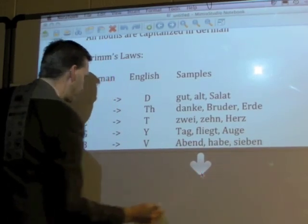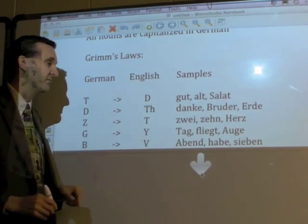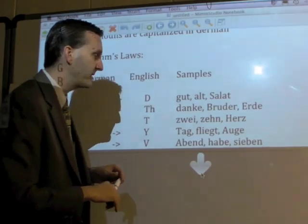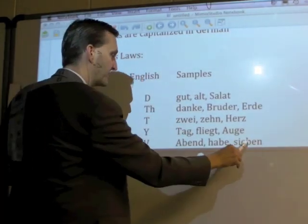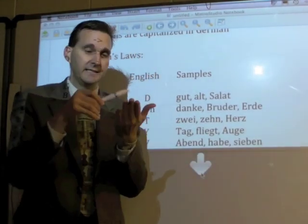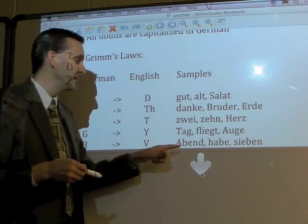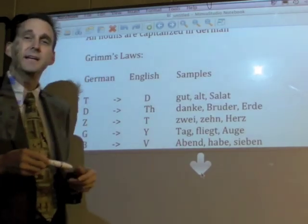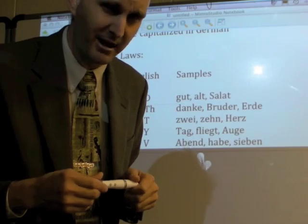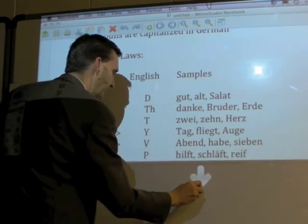The German B becomes an English V. Like 'sieben' — where we say 'seven' with a V, the Germans have a B that turned into a V for English. Or 'habe' — 'ich habe' means 'I have' — you can see that. 'Abend' — if we know the B becomes a V, you can probably guess that 'Abend' is 'evening'. That's a little harder but gets you close.